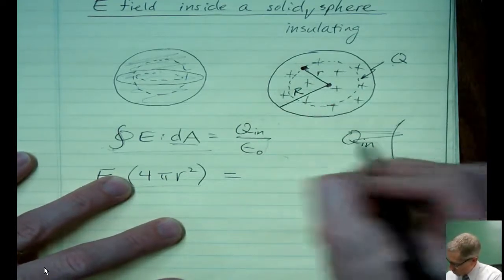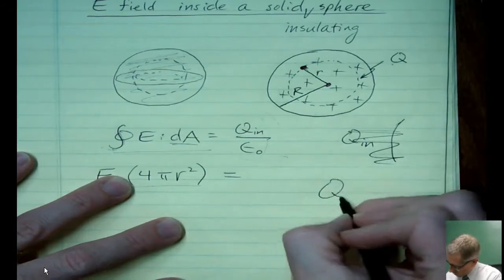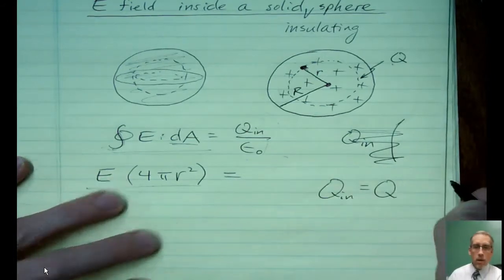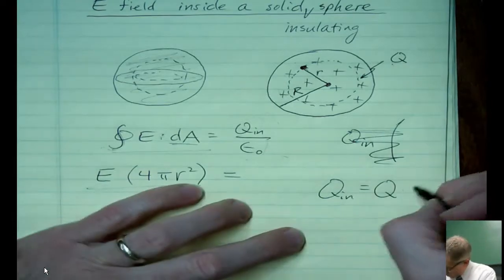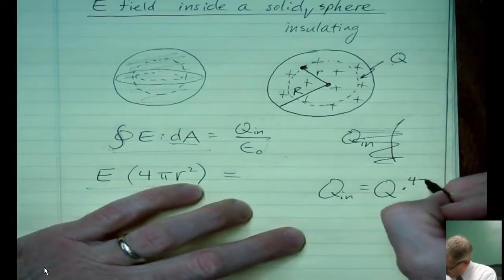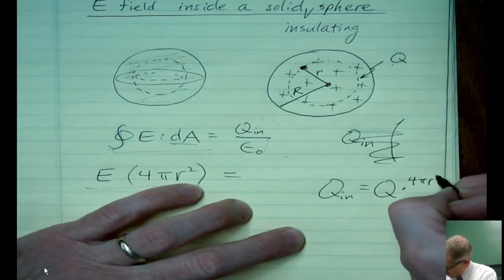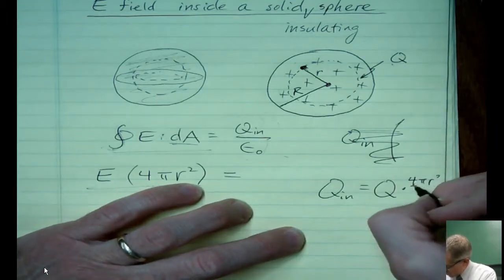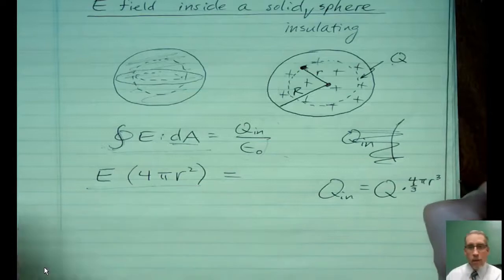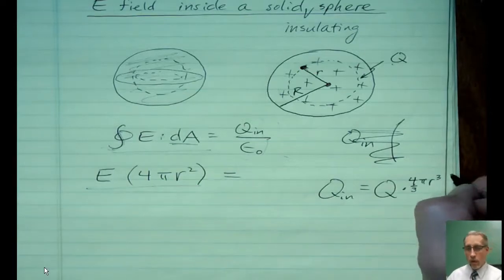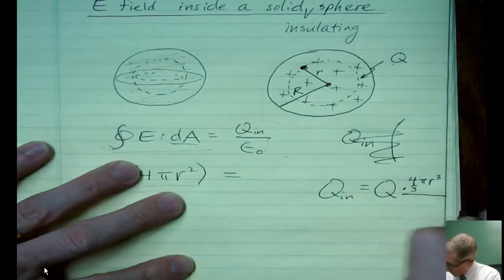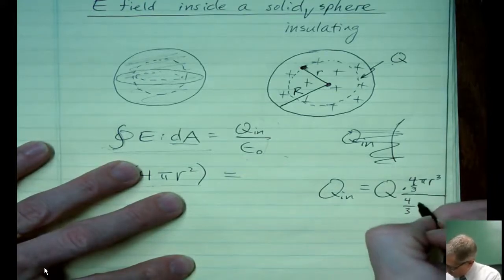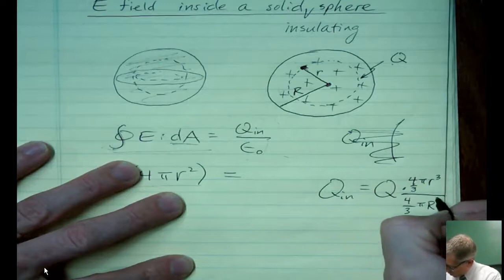The amount of charge inside the little Gaussian sphere is equal to the entire charge - oh, I wrote this bad. Sorry. Q_in equals the entire charge times the ratio of those two volumes, which is 4π little r... I'm sorry, 4/3πr³. Now, I'm using a volume for a sphere. 4/3π little r³ divided by 4/3π big R³.